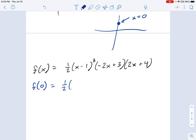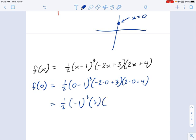So, just figure out what f is if x equals 0. You say, 1 half, 0 minus 1 cubed, negative 2 times 0, plus 3, and 2 times 0, plus 4. Okay? Well, this becomes simple very fast. You have negative 1 cubed times 3 times 4, which, if you go through the math, gives you negative 6.